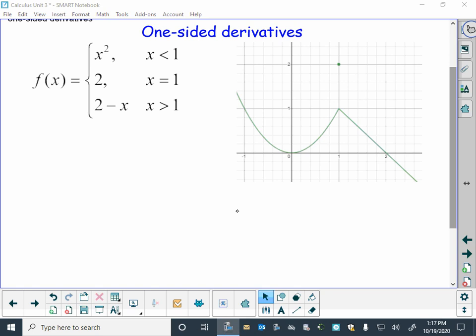This necessitates something that we call one-sided derivatives, because our rates of change on one side of the point x equals 1 is the issue here. Clearly, those rates of change, those slopes of the tangent lines, our derivative is different to the left of 1 than it is to the right of 1.